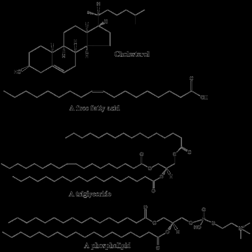Scientists sometimes broadly define lipids as hydrophobic or amphiphilic small molecules. The amphiphilic nature of some lipids allows them to form structures such as vesicles, multilamellar, unilamellar liposomes, or membranes in an aqueous environment. Biological lipids originate entirely or in part from two distinct types of biochemical subunits or building blocks: ketoacyl and isoprene groups.